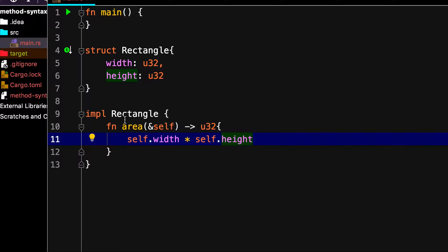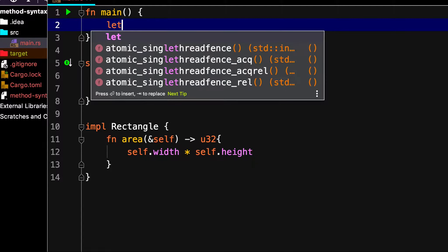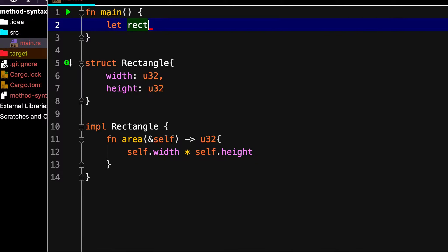So this will return the area. Now in the main we will create a rect instance.